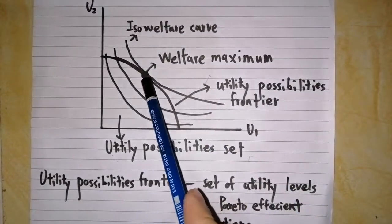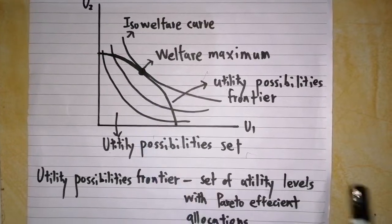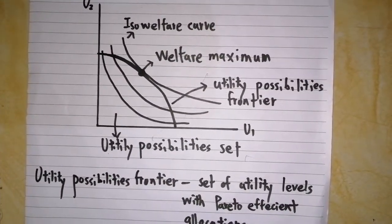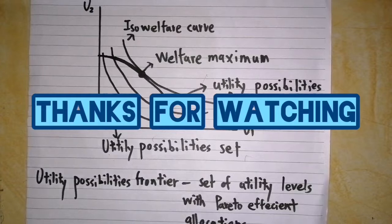So this point is Pareto efficient. In conclusion, we can say that the welfare maximum or maximum welfare allocation must be Pareto efficient. That's all for my video. Thanks for watching.